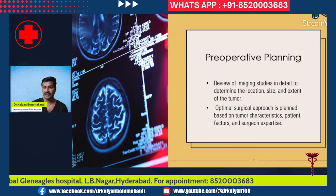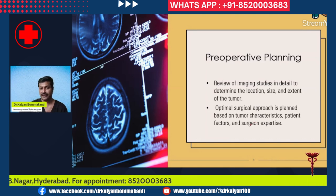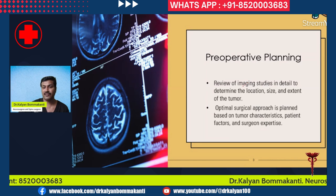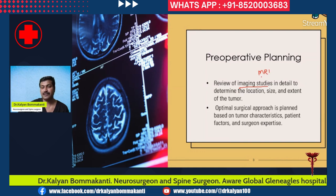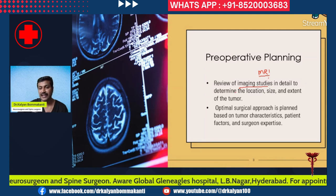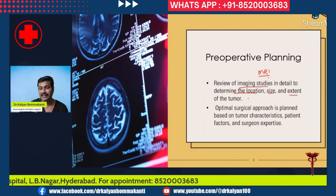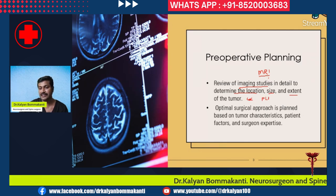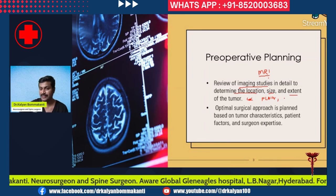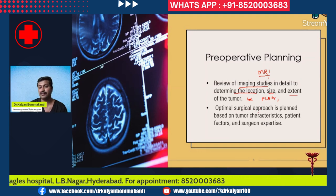The most important step of preoperative planning is the review of imaging studies — that is the MRI. Spend sufficient time reading the MRI, both plain and contrast images. Determine the exact location, size, and extent of the tumor. Also look for characteristics like whether there is a clear plane, whether the tumor is well-defined, presence of calcification, cysts, and tumor edema. The optimal surgical approach is planned based on tumor characters from MRI, patient factors, and the surgeon's expertise.